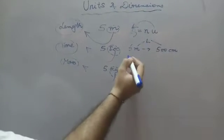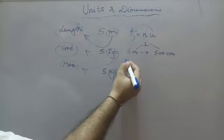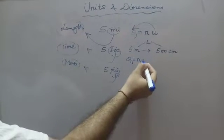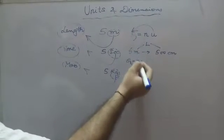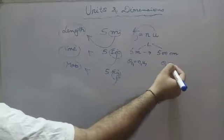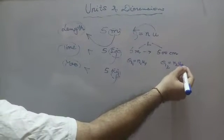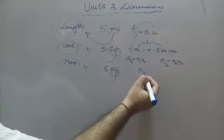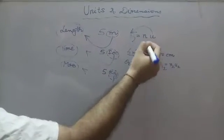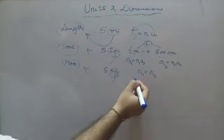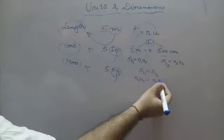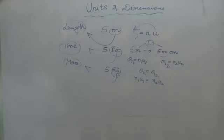So five meters is basically Q1 = n1·u1, where Q1 is length, n1 is five, and u1 is meter. Similarly Q2 = n2·u2. Since Q1 equals Q2 — in both cases Q remains length — therefore we can say that n1·u1 = n2·u2.